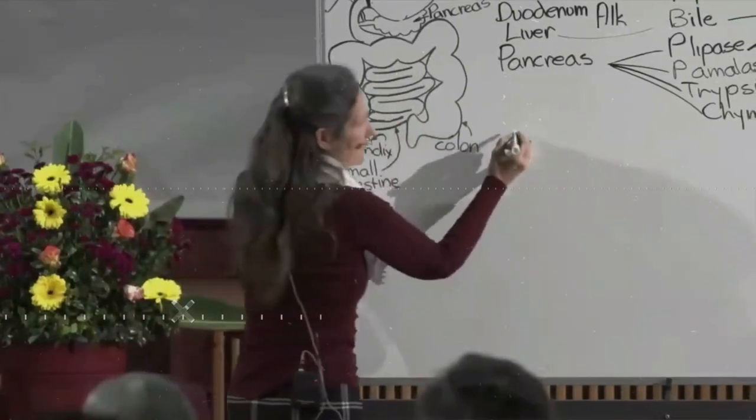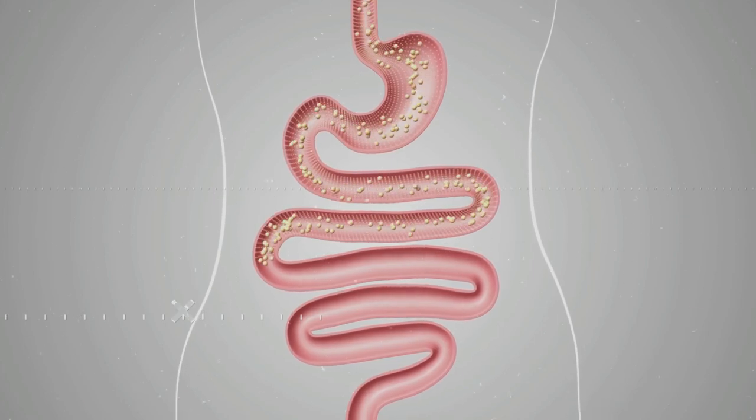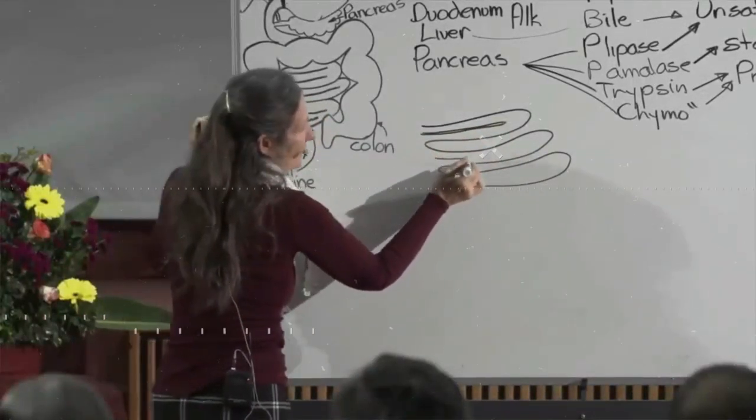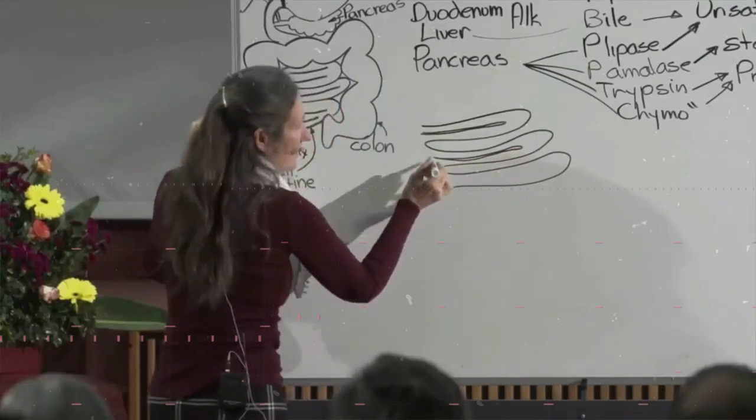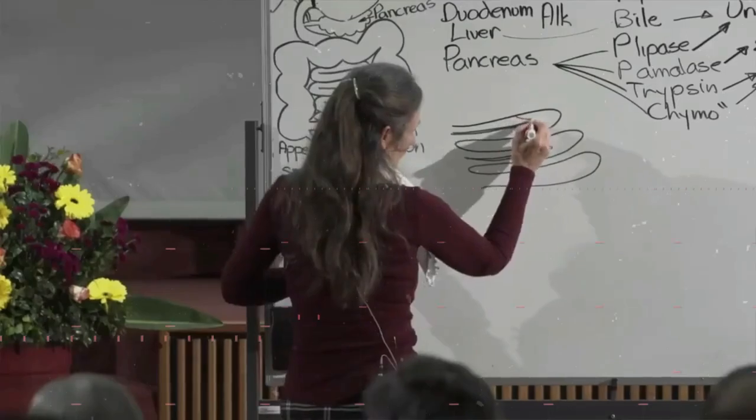Lining the small intestine are villi. And the villi basically look like this. And up the middle of the villi is a lacteal. That's part of your lymphatic system. And then all through the villi is your blood capillary network.